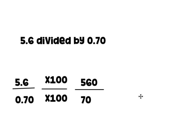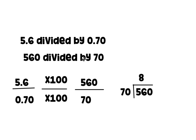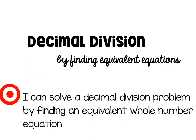5 and 6 tenths multiplied by 100 is 560. 70 hundredths multiplied by 100 is 70. So our equivalent whole number equation is 560 divided by 70, which equals 8. Therefore our answer to 5 and 6 tenths divided by 70 hundredths is 8. In this lesson you learned decimal division by finding equivalent equations — how to solve a decimal division problem by finding an equivalent whole number equation. Have a great day and I'll see you tomorrow.